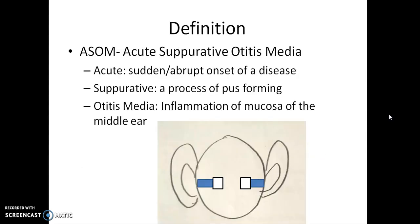Breaking down each word: acute means a sudden or abrupt onset of a disease. Suppurative means a process of pus forming — entry of microorganisms into the body causes infection, the WBCs fight this infection as immunity, and ultimately both the bacteria and WBCs die, resulting in pus formation. So suppurative means the process of pus formation which happens in the middle ear.